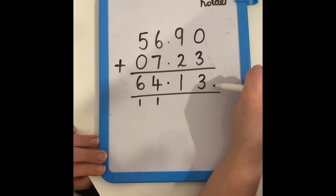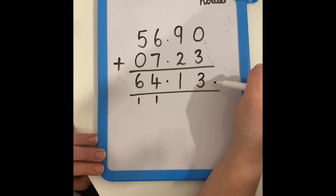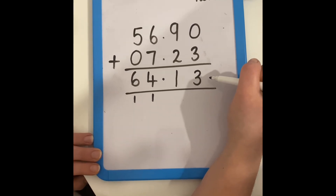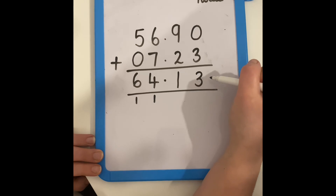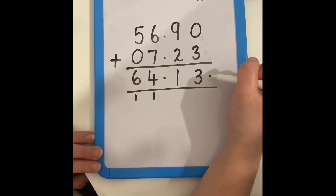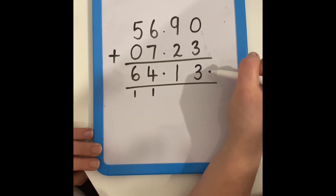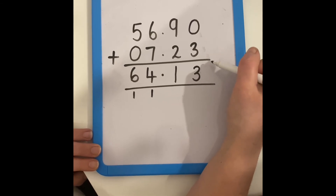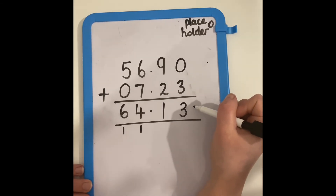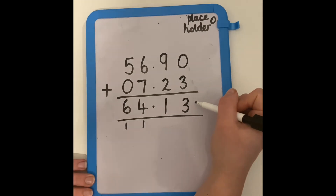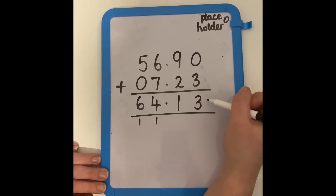Underneath this video, you will find a link to some activities for you to complete today. You'll be completing questions where you need to add five and four digit numbers together, and questions where you need to add decimals together. You can always refer back to this video to help you if you get stuck, or use the contact button on the year six class page if you have any questions.